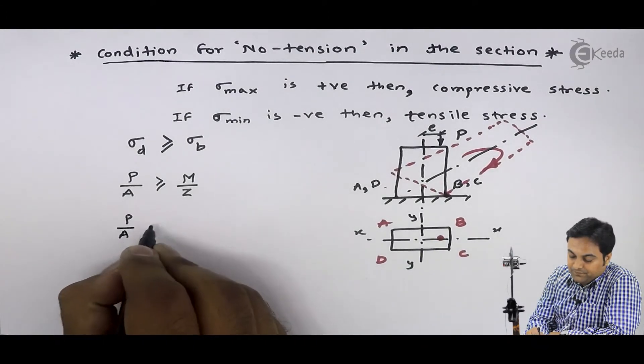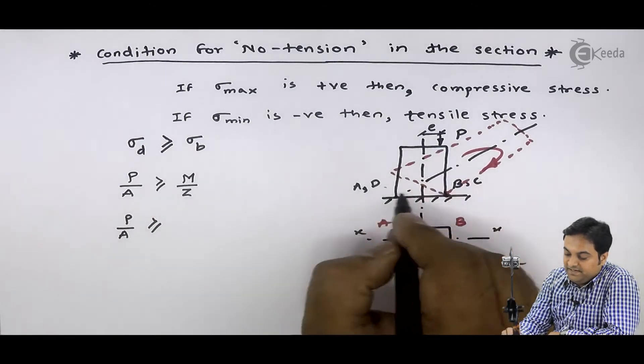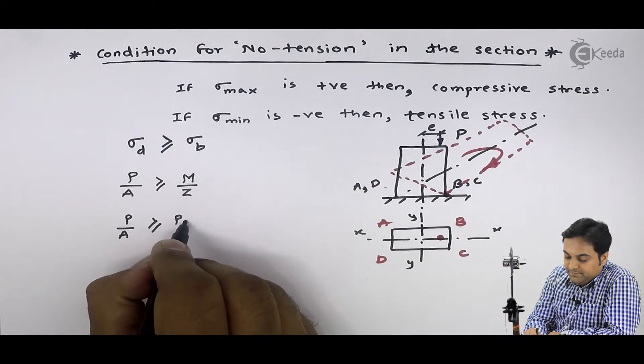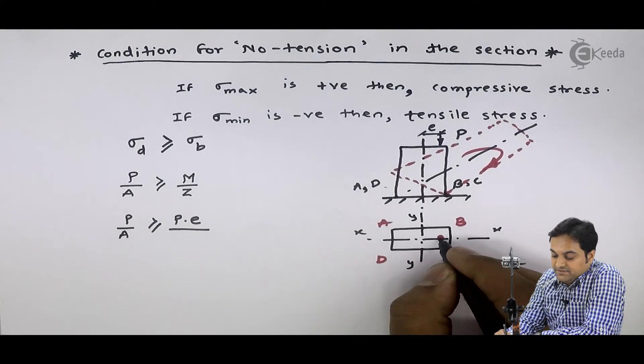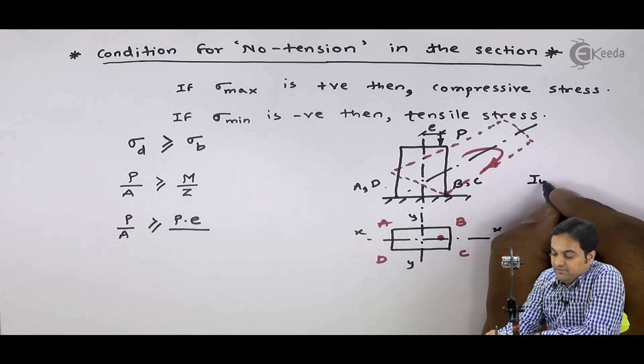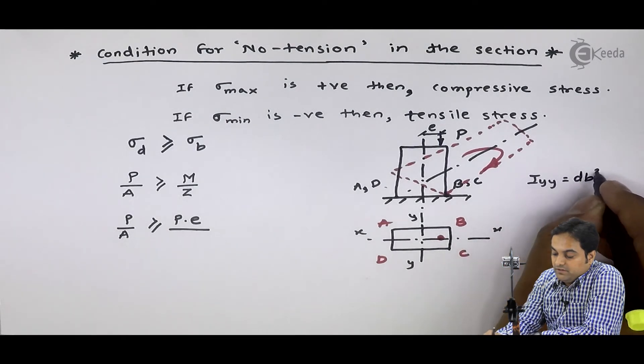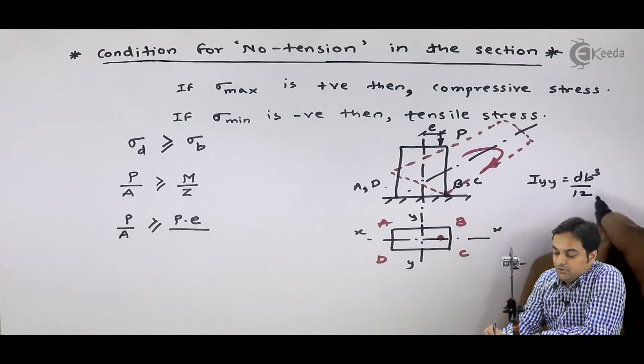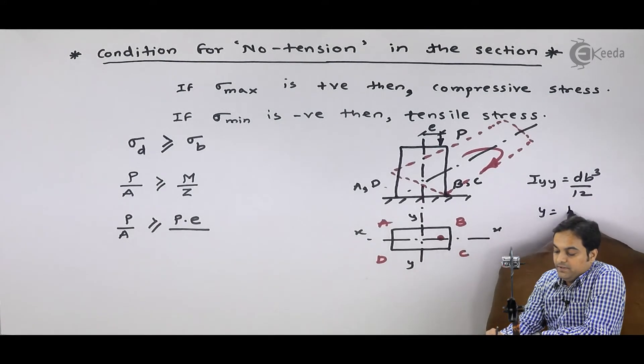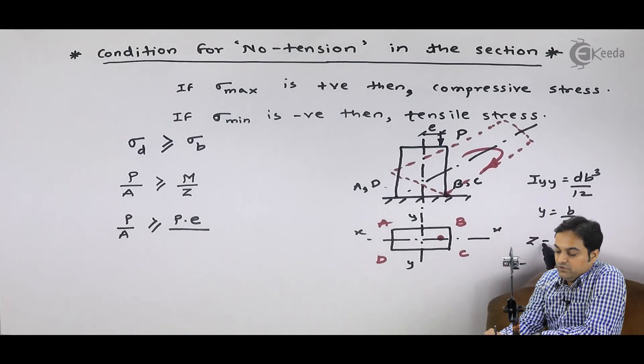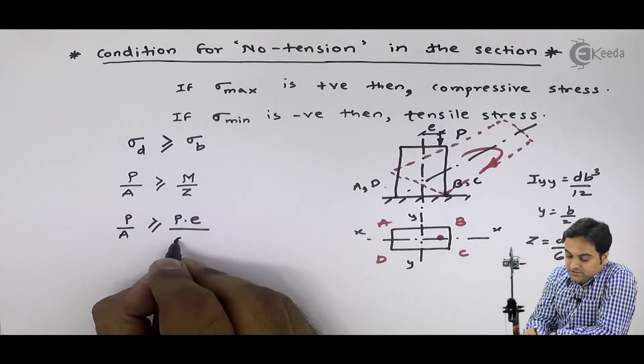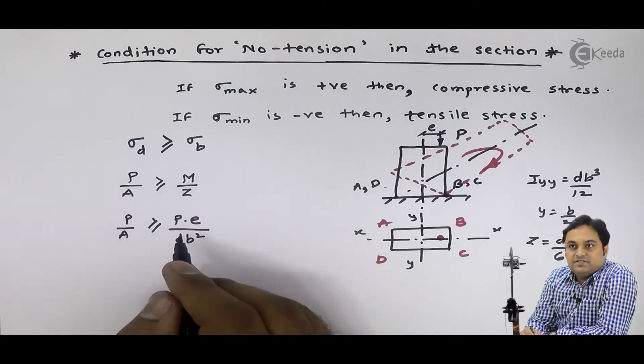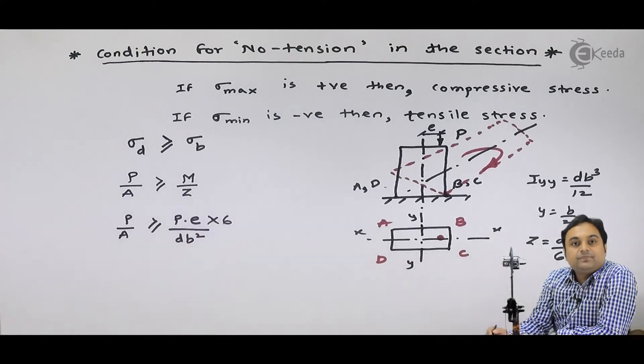So your condition is sigma d should be greater than or equal to sigma b. Now, we know sigma d is load upon area, that is p upon a, direct stress. Bending stress is m upon z, that is bending moment upon section modulus. So, p upon a greater than bending moment is p into e divided by z. We have to calculate z for rectangular section. Eccentricity is with respect to y. So, Iyy is equal to db cube by 12 and y is equal to b by 2. So, z is db square by 6. So 6 will come into the numerator.